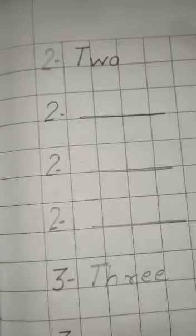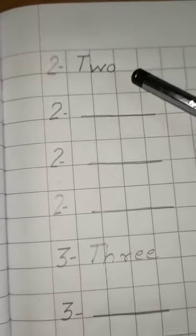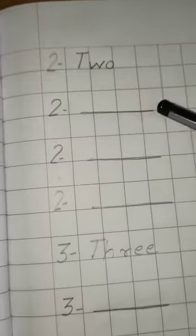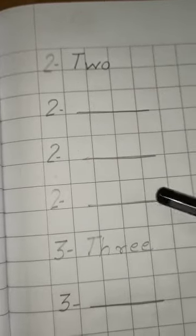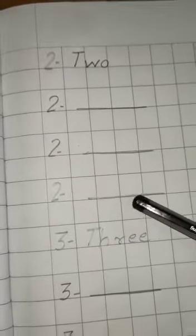Next, two, T-W-O, two. Again, you have to copy this number three times. T-W-O, two. T-W-O, two. T-W-O, two.